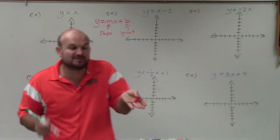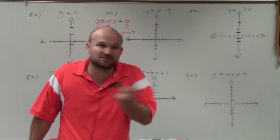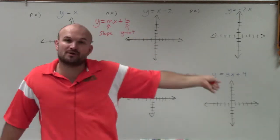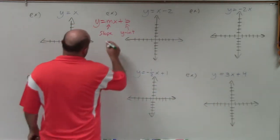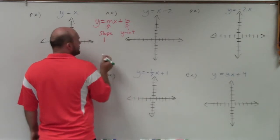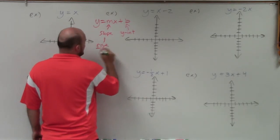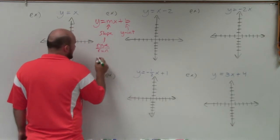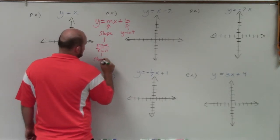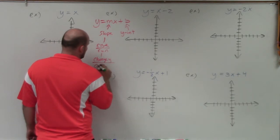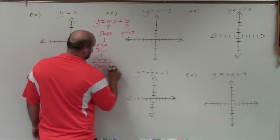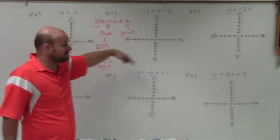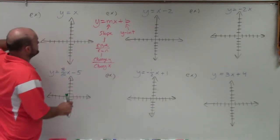We can use the slope formula y2 minus y1 over x2 minus x1, but that's not really going to help us because we don't have any coordinate points — we have an equation to graph. We talk about slope as rise over run, but I always like to think of it as the change in y-coordinates over the change in x-coordinates. Now, b represents the y-intercept, and that's going to be where the graph crosses the y-axis.